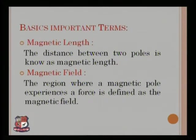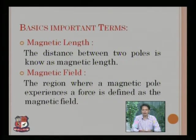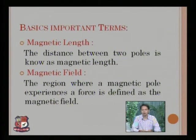The next basic term is magnetic length. As described earlier, there are two poles: north pole and south pole. Magnetic length is defined as the distance between the two poles of a magnet. Since a magnet is dipolar, the distance between its two poles is known as the magnetic length.